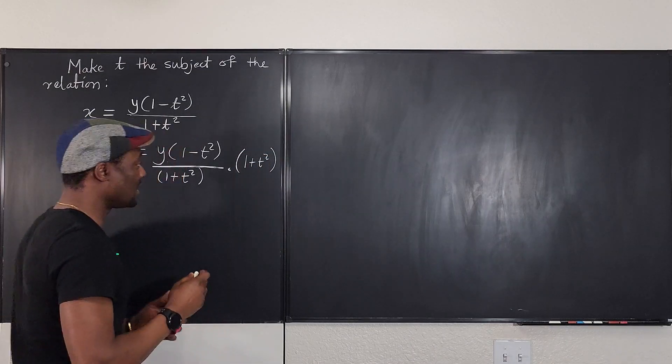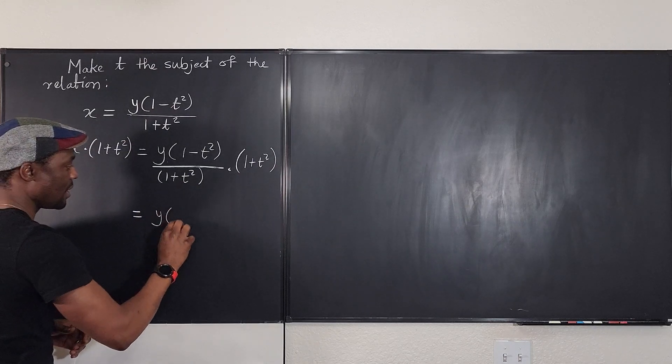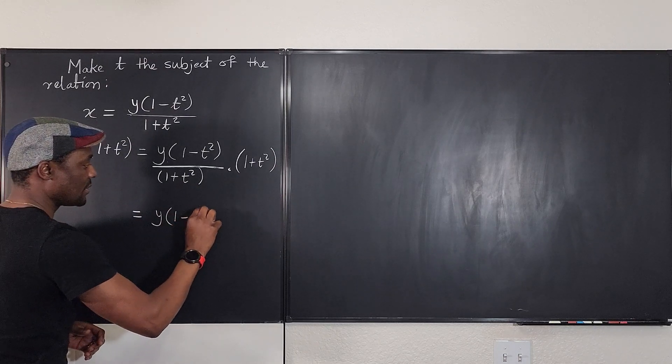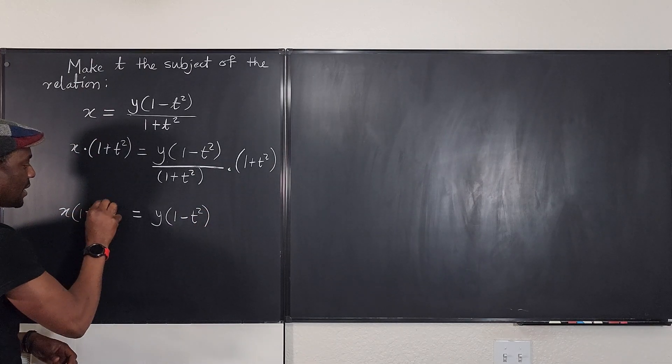So from here, you can see that this is going to cancel this out. And we're going to have an expression like this, just Y multiplied by one minus T squared. And here you have this X, one plus T squared.